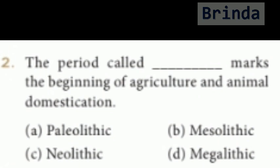Second question: the period that marks the beginning of agriculture and animal domestication. Options are Paleolithic, Mesolithic, Neolithic, and Megalithic. The answer is Neolithic. The period called Neolithic marks the beginning of agriculture and animal domestication.